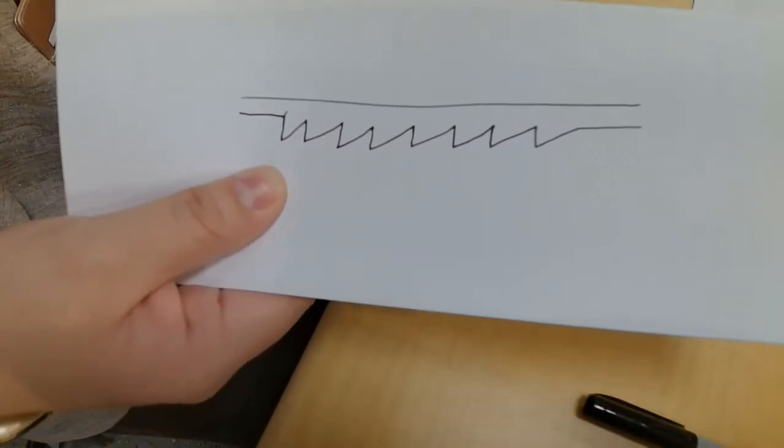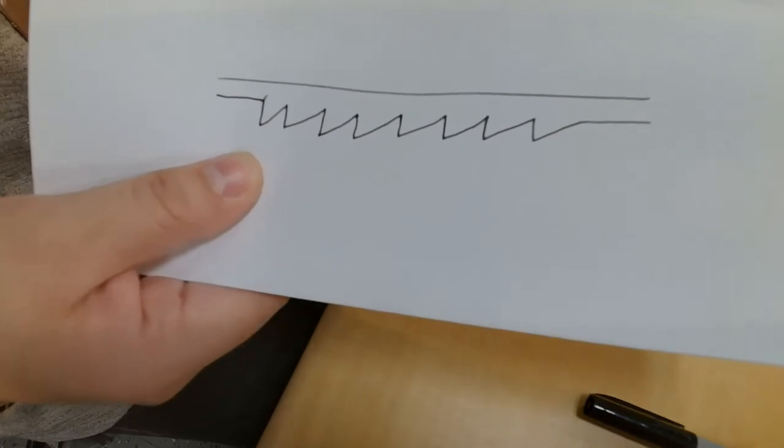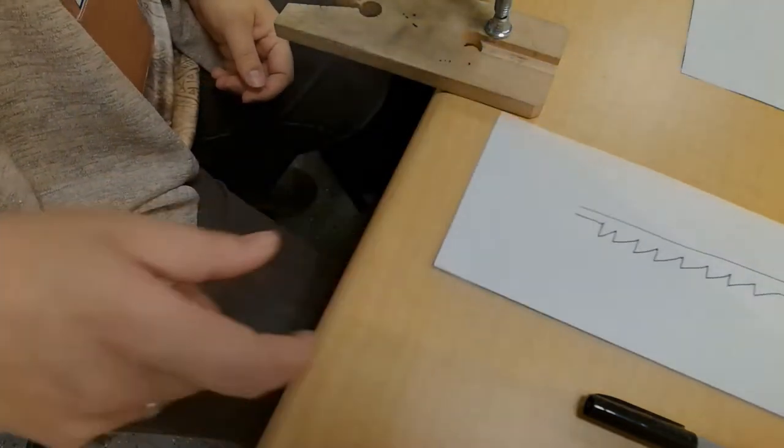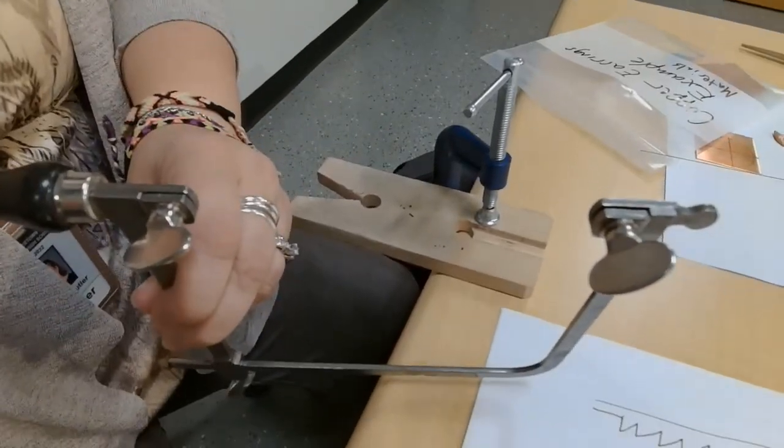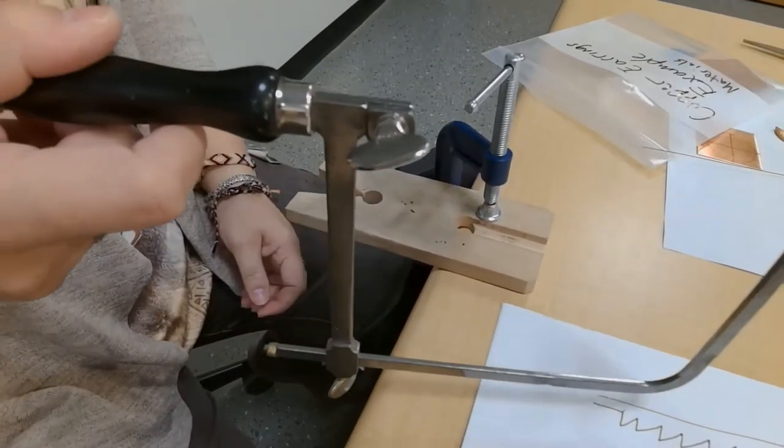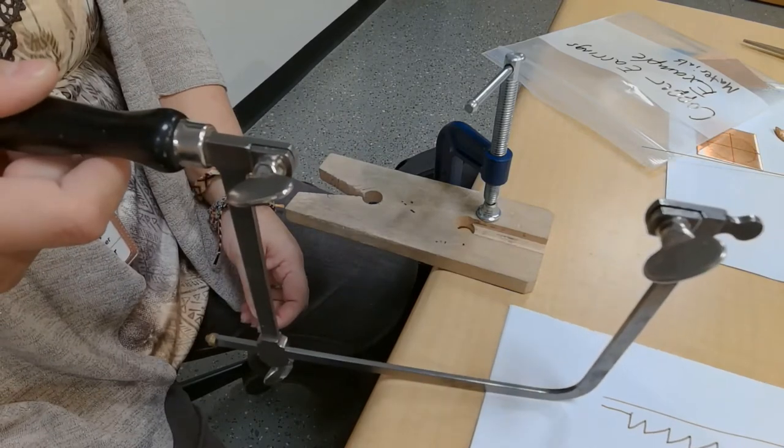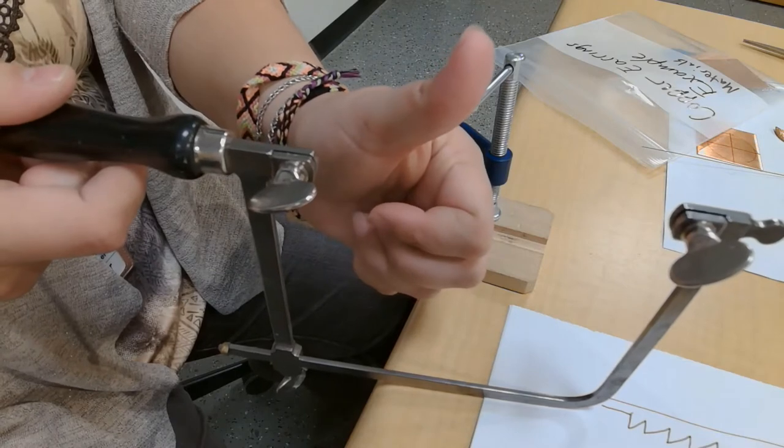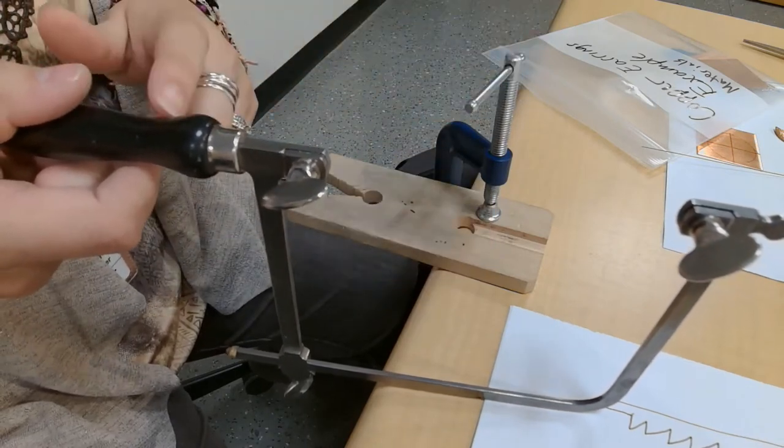You want the teeth to be facing you and up when you go in the saw, in the blade. So that should make sense in one second. Here's my jeweler's saw. I'm going to hold it. When I'm putting the blade in, I'm going to be holding it like this. So this is up. And toward you is toward the handle. Toward this part.